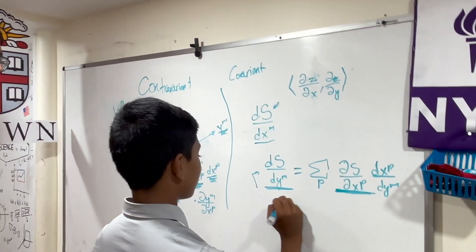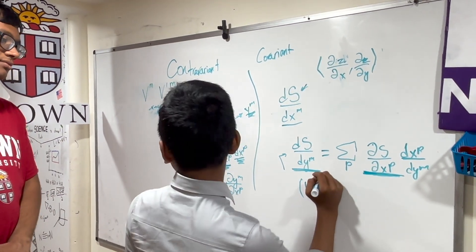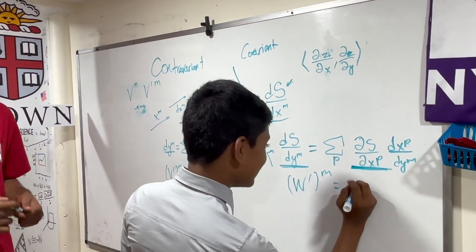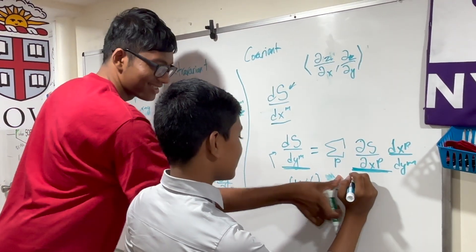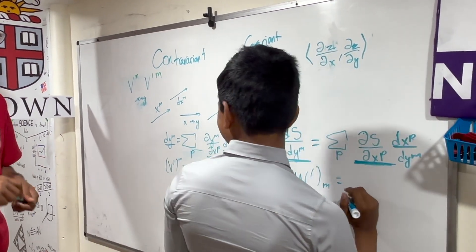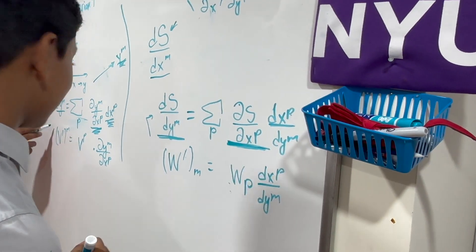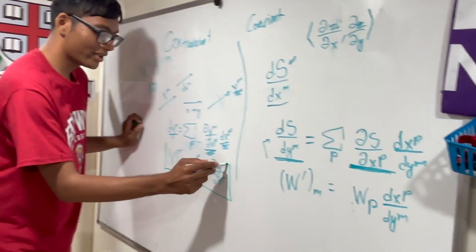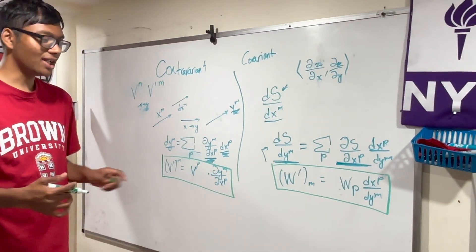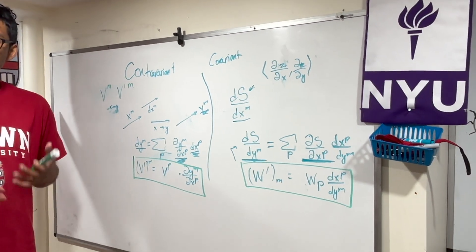Go ahead and generalize this one. And we're going to use w to signify that this is a covariant component. So you've written down the tensor transformation rules for contravariant and for covariant components of tensors, right? Great. Wonderful.